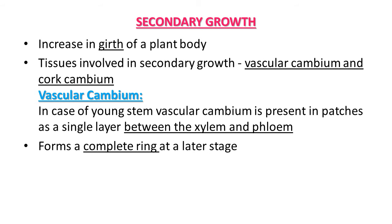Now, secondary growth. We have an idea about primary growth in plants — due to meristematic activity, the radicle and plumule develop, forming aerial and underground parts of the plant. After primary growth, further growth takes place that increases the girth of the plant body. This further growth is known as secondary growth.